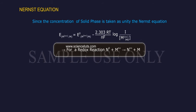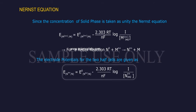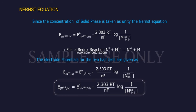For a redox reaction, M° + M^(n+) gives N^(n+) + M. The electrode potentials for the two half cells are given as E(N^(n+)/N) = E°(N^(n+)/N) - 2.303RT/(nF) log(1/[N^(n+)(aq)]). Electrode Potential = Standard Electrode Potential - 2.303RT/(nF) log(1/concentration of ions).